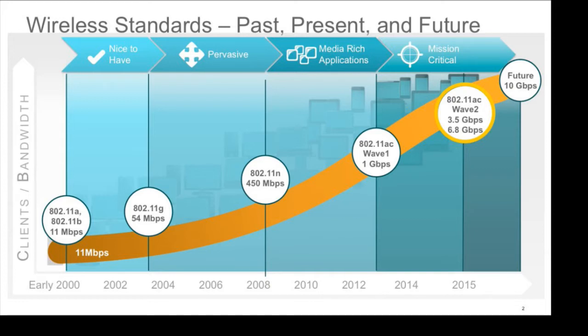We're starting to see APs coming out now where the AP is faster than the backhaul link to the switch that supplies it. Clearly you could run multiple links, but it's not a great idea. You need to re-cable and link aggregation has its issues. So how can we address this urgent problem for those who want to attach faster wireless?